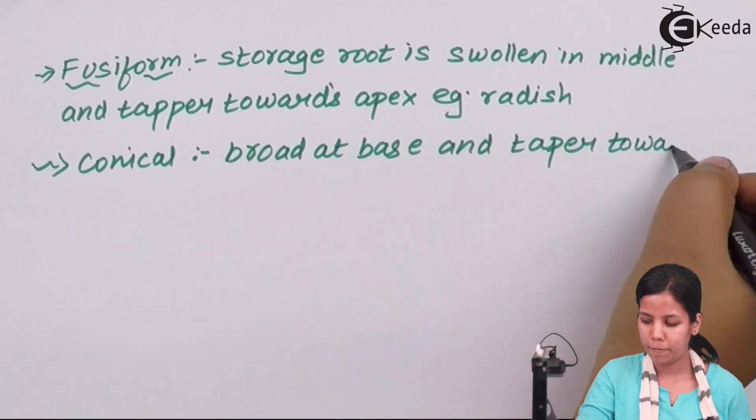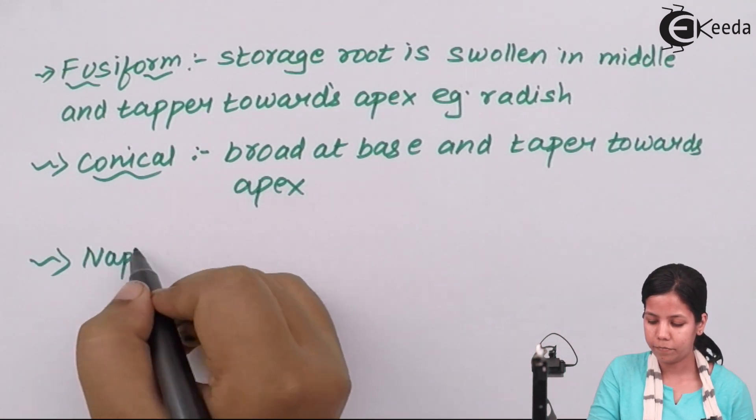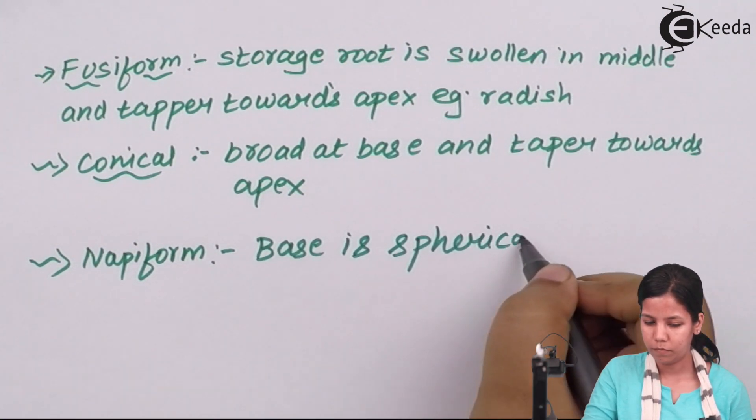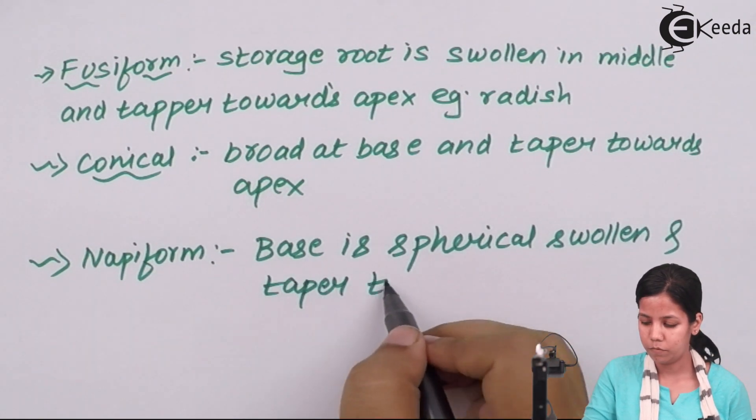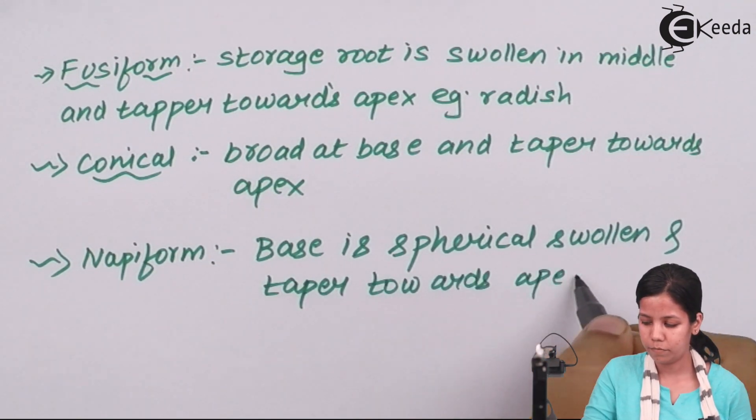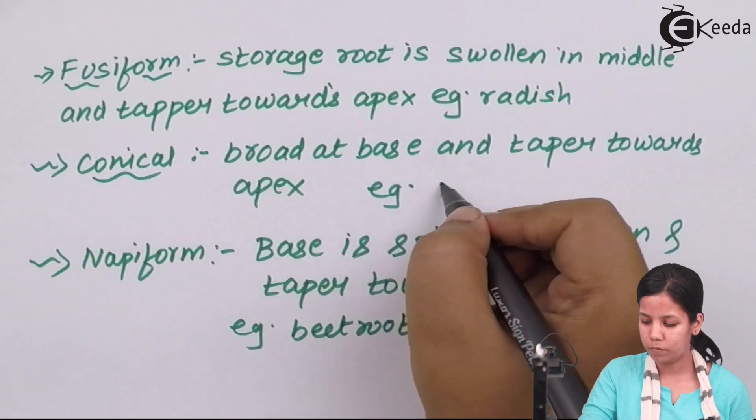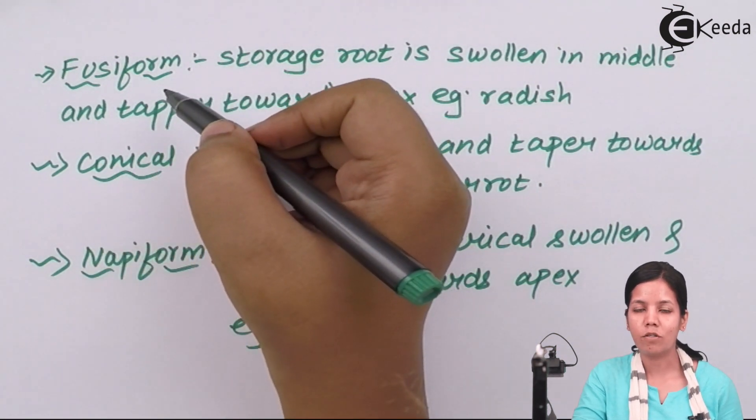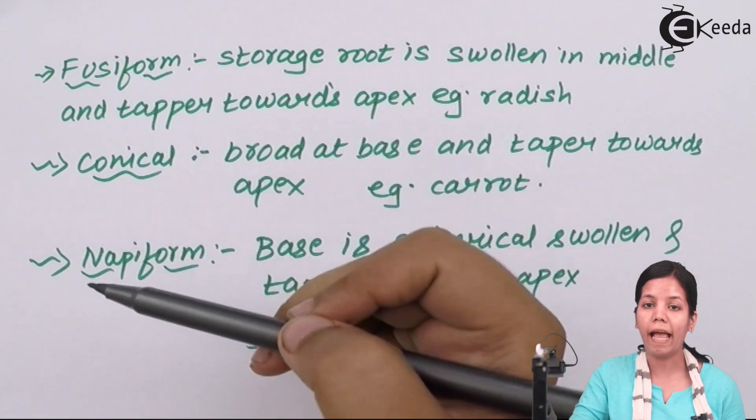The three different kinds of food storage modifications are fusiform, conical form, and nappy form.